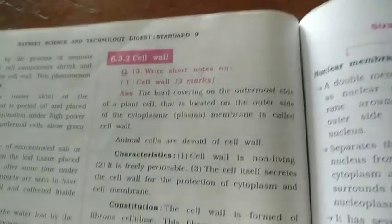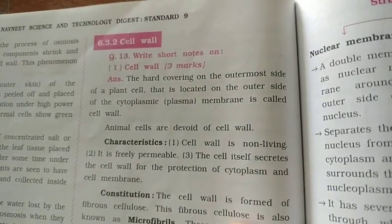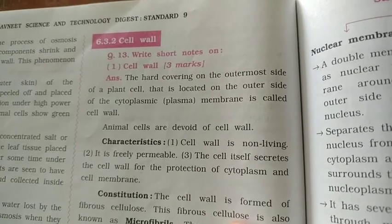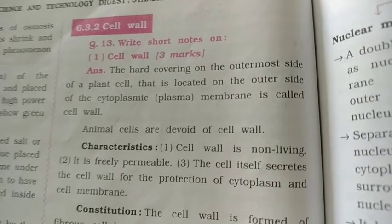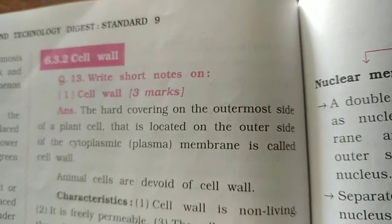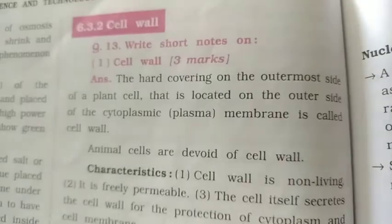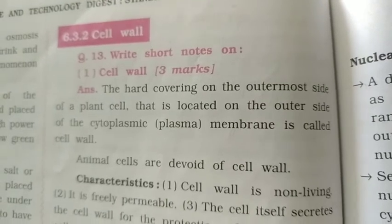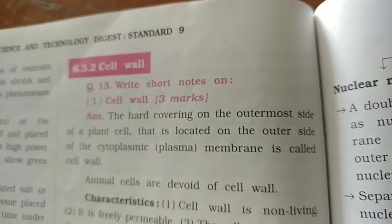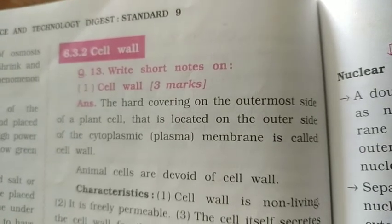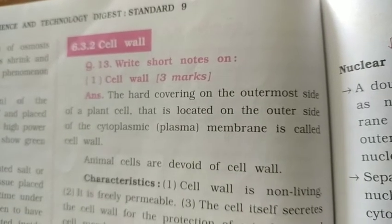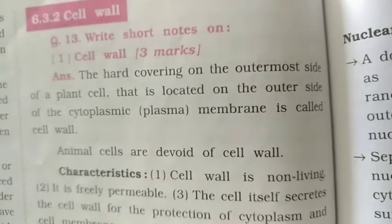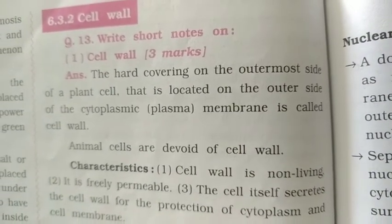Cell wall: the hard covering on the outermost side of the plant cell, located on the outer side of the cytoplasmic membranes, is called the cell wall. Animal cells are devoid of cell wall.